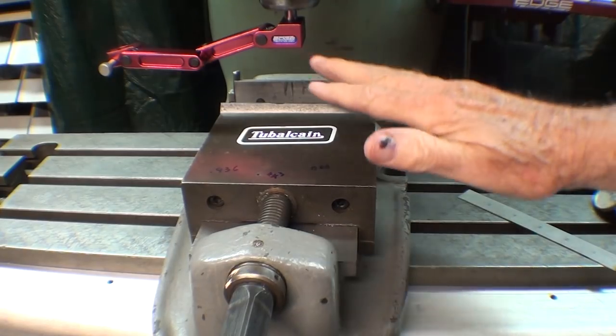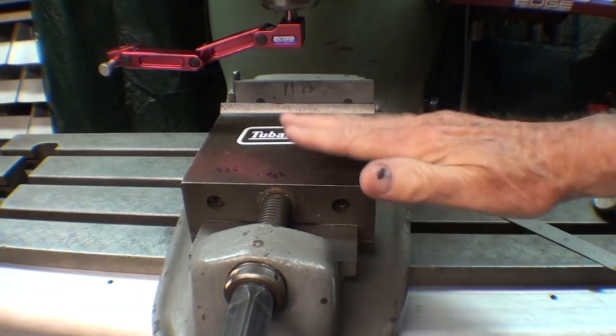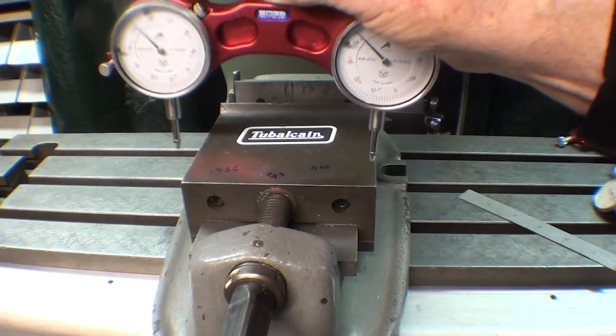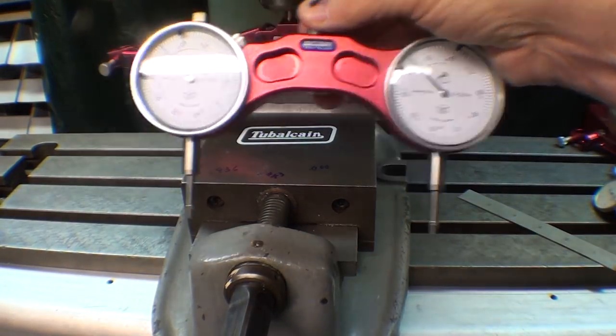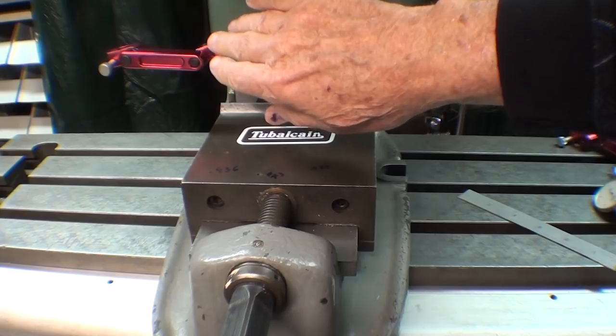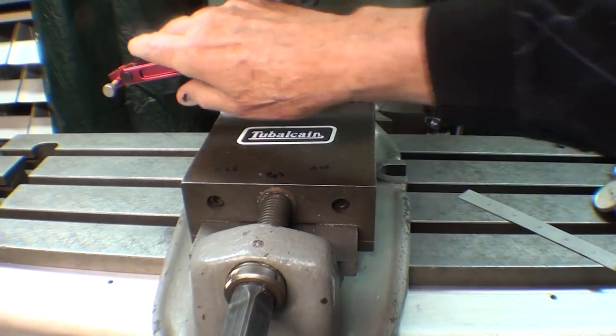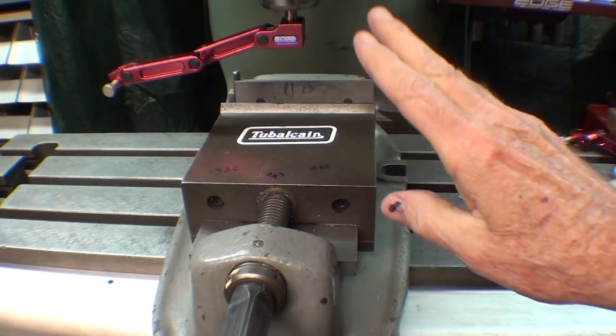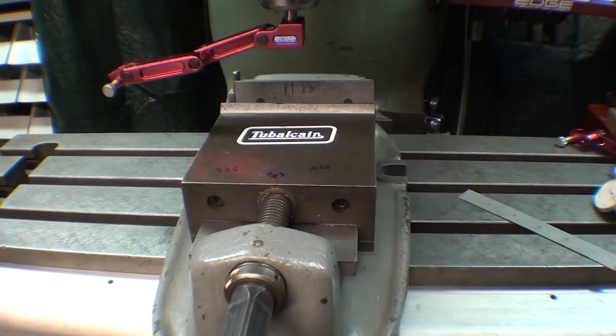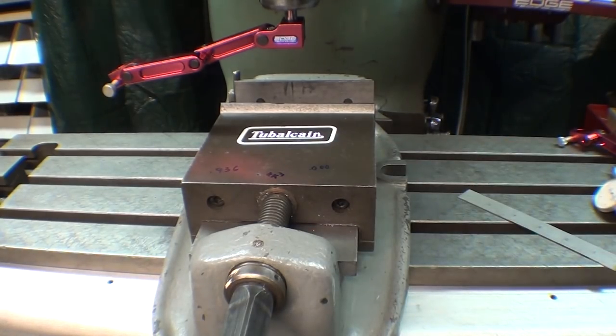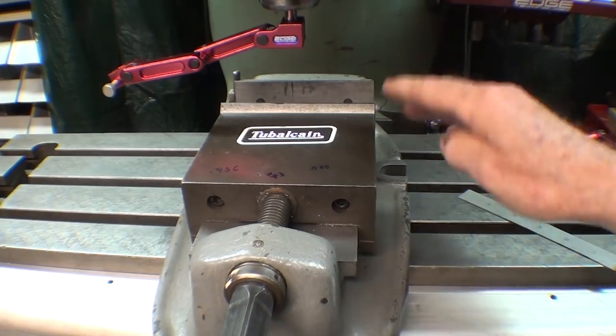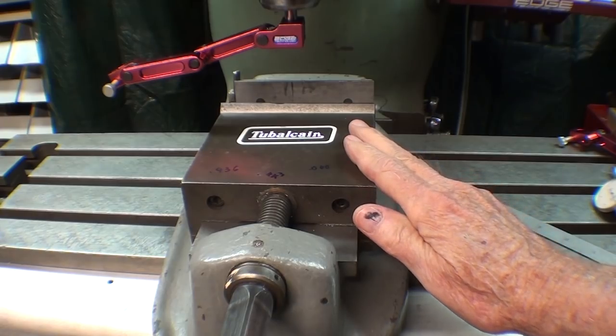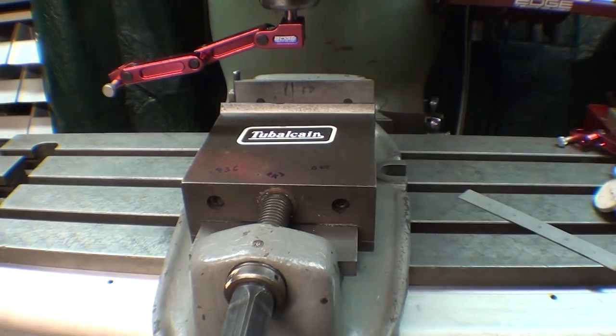Some people tram the vise. This is a 5-inch vise, but if you have a 6-inch vise, such as a KURT, you can tram the vise itself using the ProTram or this type of indicator holder. Edge technology also produces a mini-ProTram that is ideal for smaller milling machines, mini-mills. But I'm going to take the vise off, and I'm going to tram the table rather than the vise.